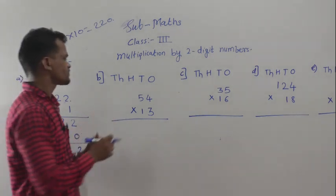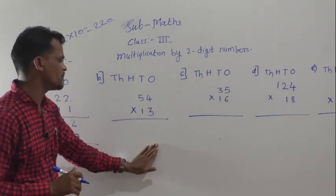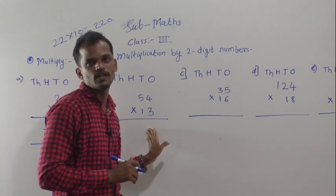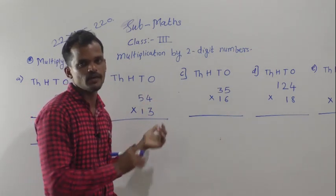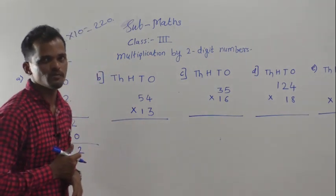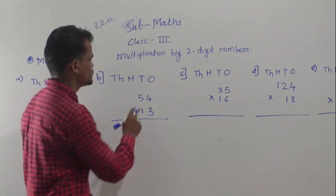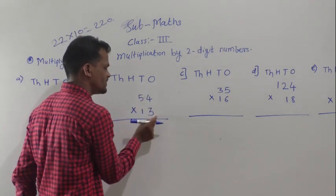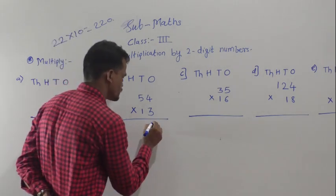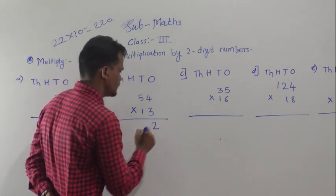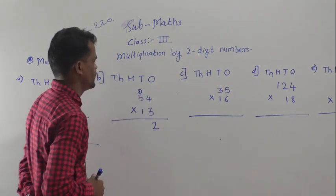Next example: 54 multiply by 13. We will solve this with the long multiplication method. If you know the table of 13, you can solve it directly. So, 54 multiply by 13 — first multiply 54 by 3. 3 fours are 12, so write 2 here and carry 1.